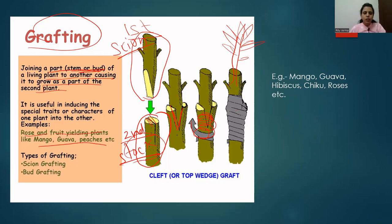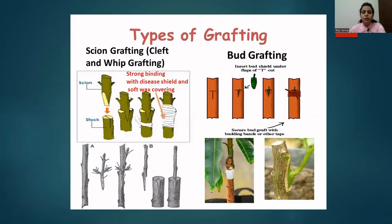There are two types of grafting: scion grafting and bud grafting. In scion grafting, a part of the first plant called the scion is taken and placed into the cleft of the stock. It is tied properly so that the scion and stock can fuse together and grow as an individual plant.